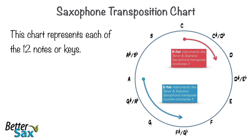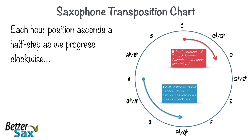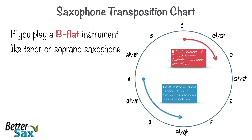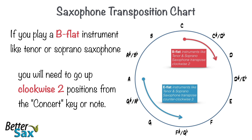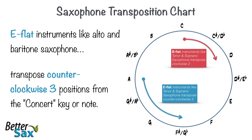This chart represents each of the 12 notes or keys, arranged chromatically in a circle like a clock. Each hour position ascends a half step as we progress clockwise and descends a half step in the counterclockwise direction. If you play a B flat instrument like tenor or soprano saxophone, you will need to go up clockwise two positions from the concert key or note. E flat instruments like alto and baritone saxophone transpose counterclockwise three positions from the concert key or note.